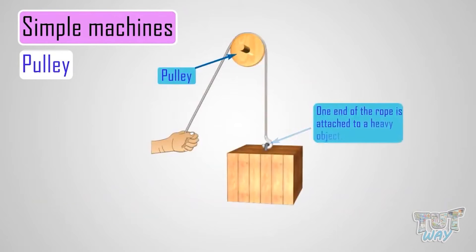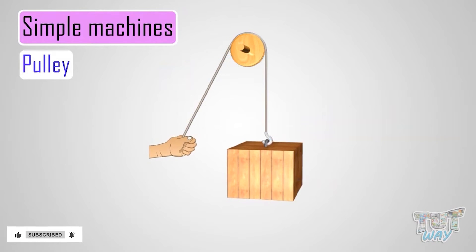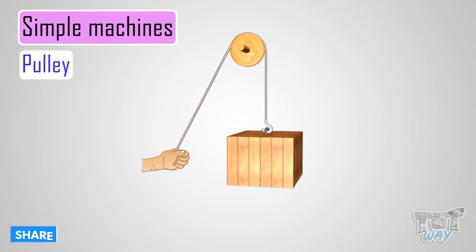One end of the rope is attached to a heavy object which we want to lift, and the other end of the rope is pulled through the system of pulley like this. This system of pulley makes it easier to lift the object.